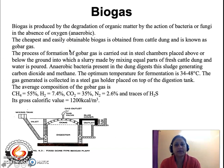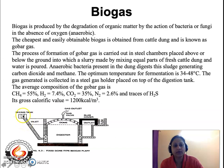Biogas is produced by the degradation of organic matter by the action of microorganisms like bacteria or fungi in the absence of oxygen — that means the conditions maintained have to be anaerobic. The cheapest and most easily obtainable biogas is obtained from cow dung, and it is known as gobar gas. The formation of gobar gas is carried out in steel chambers called digesters, placed above or below the ground, into which a slurry made by mixing equal parts of fresh cow dung and water is poured. The anaerobic bacteria present in the dung digest this sludge, generating carbon dioxide and methane. The optimum temperature for the digestion process is 34 to 48 degrees centigrade, and the gas is collected in a steel gas holder placed on top of the digestion tank.